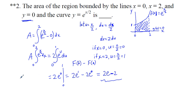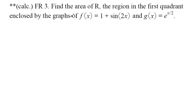The last one we're going to work on is a graphing calculator problem. Find the area of R, the region of the first quadrant, enclosed by the graphs of F of x equals 1 plus sine 2x, and G of x equals e to the x over 2. The sine function will be raised 1. I'm not exactly sure what our limits of integration are going to be, so our F of x is going to be the larger value: 1 plus sine 2x minus e to the x over 2. We'll use the calculator to find where they intersect.